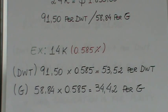So we come up with $53.52 per pennyweight when measuring for 14 karat gold when gold is trading at $1,830. For grams, we want to take $58.84 again times 0.585 for the purity of 14 karat. And that comes out to be $34.42 per gram.